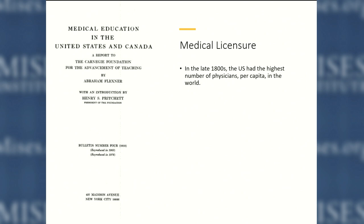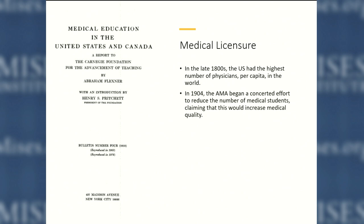Medical licensure took a big step forward with the Flexner Report. In the late 1800s, the United States had the highest number of physicians per capita in the world. Some of those were probably not very good physicians; others were excellent. But as you saw in Dr. Newman's talk, this was not to the liking of doctors who wanted to pull up the drawbridge, not allow any more doctors in, or at least greatly restrict the number of new doctors in order to drive up their own pay. There is a trade-off: you can have a lot of doctors, or you can keep doctors out and end up with maybe improved quality — but what good is high quality if you can't get in to see your doctor?